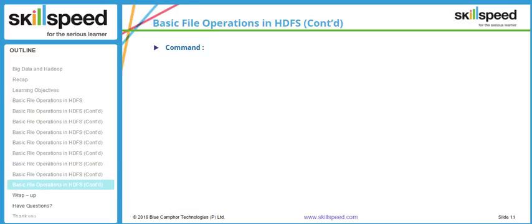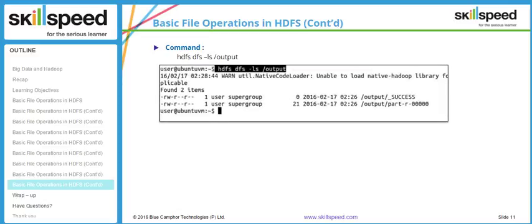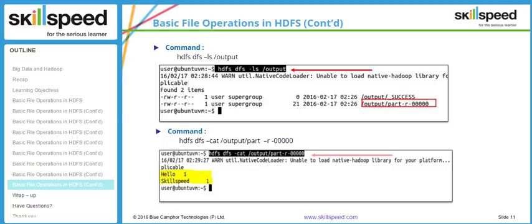To verify the output, I do hdfs dfs -ls /output, and we can see a file called part-r-00000. If you do hdfs dfs -cat on this file, you can see the result shows hello: 1, skillspeed: 1, meaning the words hello and skillspeed appear once each in the input data set. Please remember that when executing a JAR file, the output directory should not already exist in Hadoop — it will be dynamically created while the program runs. This is a wordcount example. You don't have to worry if you don't get it the first time; we will explore this further in the detailed MapReduce module with multiple examples.